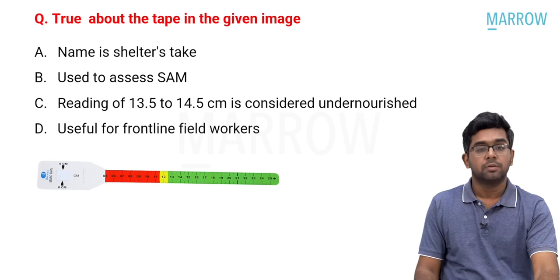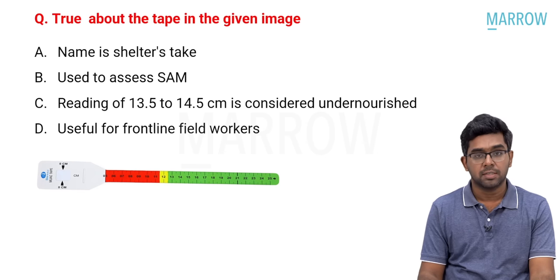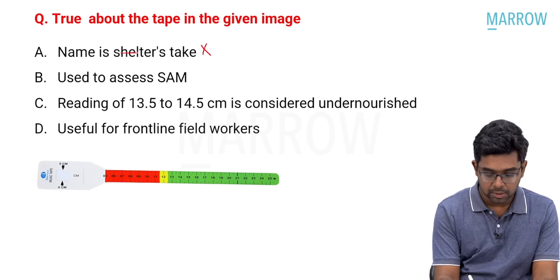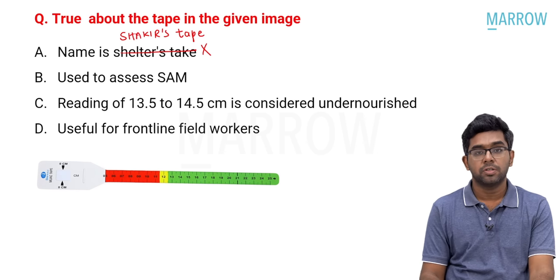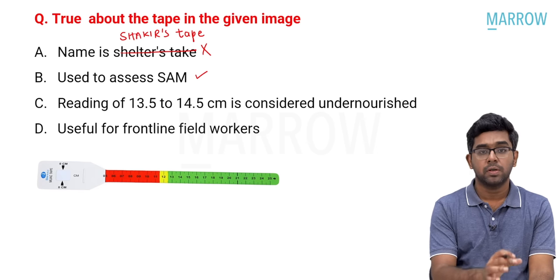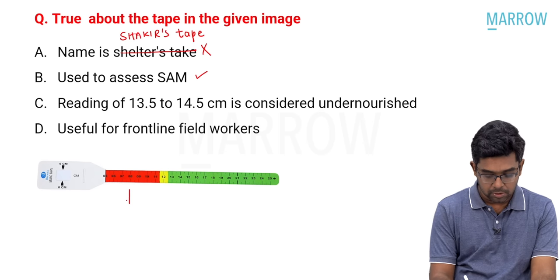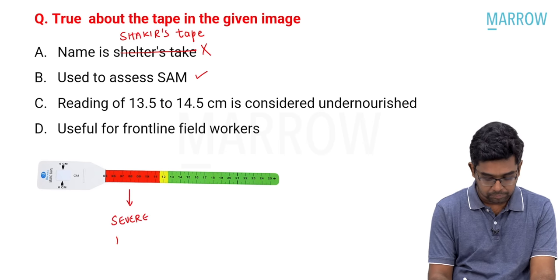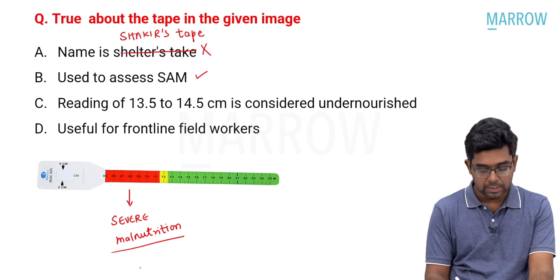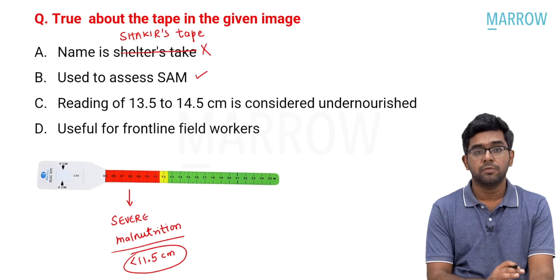Next: true about the tape shown in the given image. This is a multiple option question. This is the Shakir's tape — not Shelter's tape, so the first option is wrong. It is used to assess severe acute malnutrition — definitely a correct statement. In field visits, the Shakir's tape is used to quickly assess whether the child has severe malnutrition. The red zone corresponds to severe malnutrition, which is less than 11.5 centimeters.